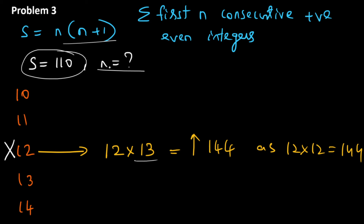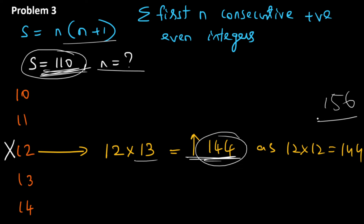When you put n = 12, you get an answer more than 110 — in fact, more than 144. You could also just multiply 12 × 13 directly to get 156. Either way, this approach is even faster: knowing 12² = 144 means 12 × 13 is just above 144, and either way it's greater than 110.